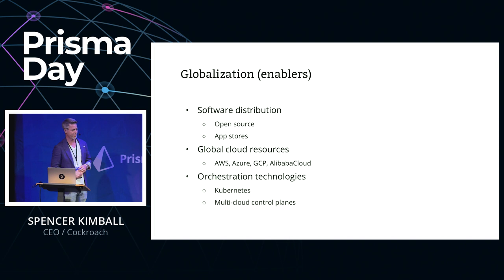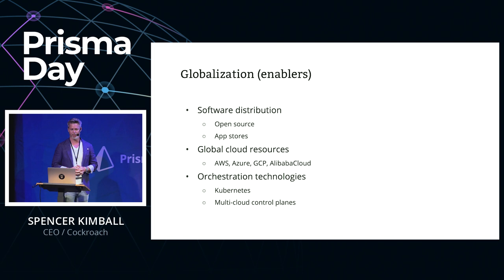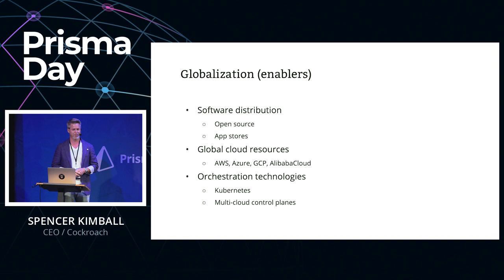Globalization is the other big thing. On the enablers side: open source software, the globalization of ideas and infrastructure, app stores that let anything you write reach a global audience overnight. There's also the ability to have globally distributed resources — something that Google had in the 2000s but now every startup has. You've got the big ones that started in the US, and new entrants like Alibaba Cloud. And of course orchestration technology — Kubernetes seems to have won that war, but there's already a next generation of multi-cloud control planes emerging.